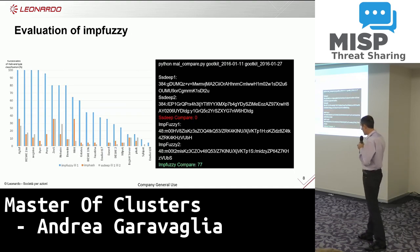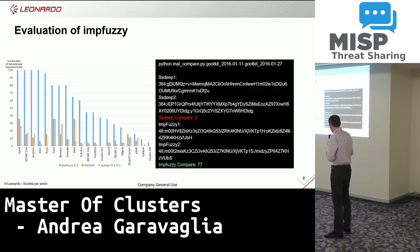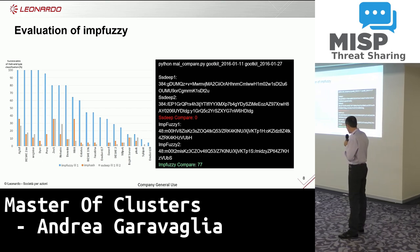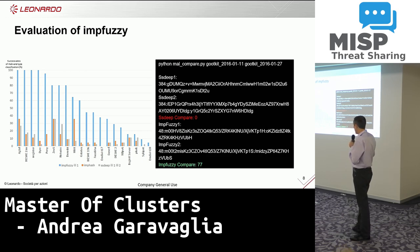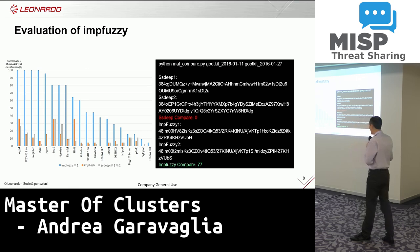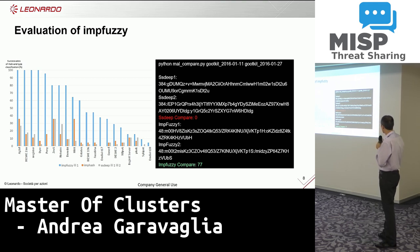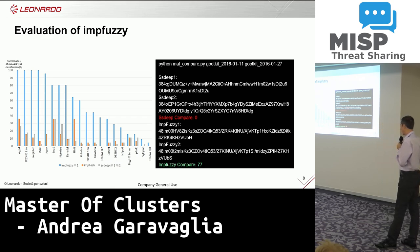This is the performance against SSDEEP — SSDEEP is the gray one and ImpFuzzy is the blue one, against different malware families. As you can see, for some families we have very good results; for some others we may not be able to identify. With the two samples previously analyzed with SSDEEP that gave us zero, now with ImpFuzzy we have 77.